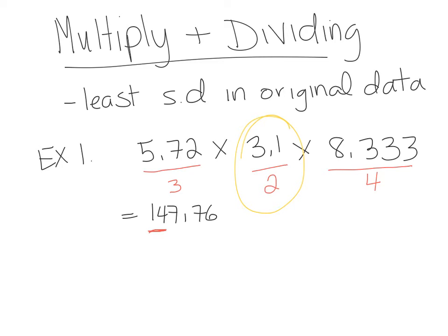The first number to be dropped is 7, which is higher than 5, so you round up. The answer is 150 — you can't write 14.7 because it's 147, and you can't have three significant digits, only two. So the answer is 150 or 1.5 times 10 to the 2, because the decimal moved two spots to the left. That zero is just a placeholder with no decimal place shown.